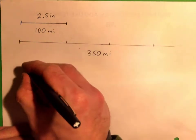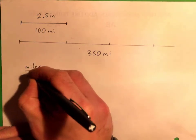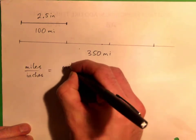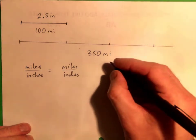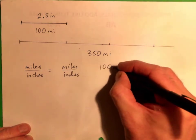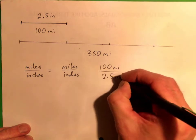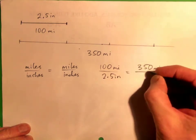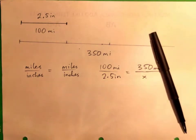So where we go, okay, miles over inches, or you could do inches over miles or miles over inches, basically. It'll all be the same at the end, no matter which way you do it. You could do inches over miles or miles over inches.